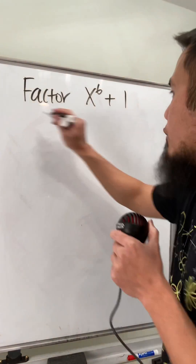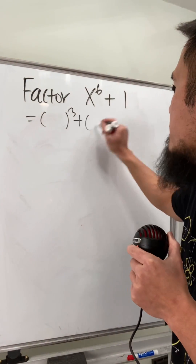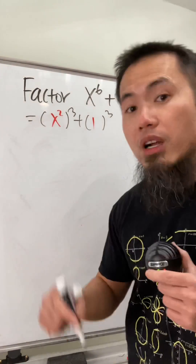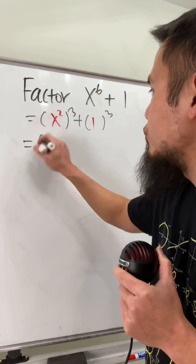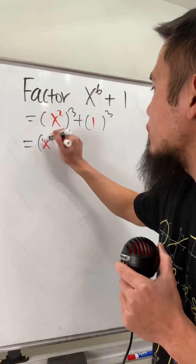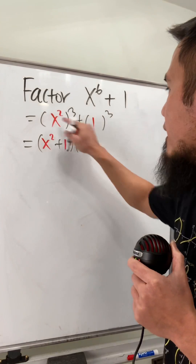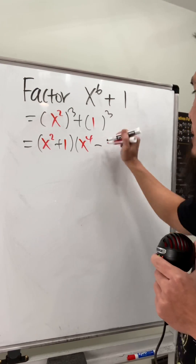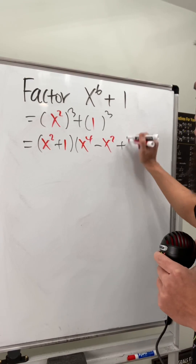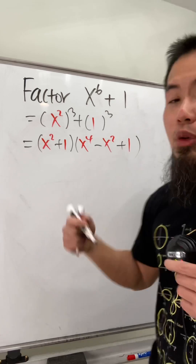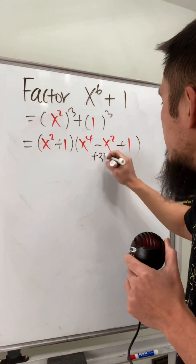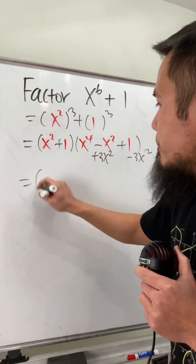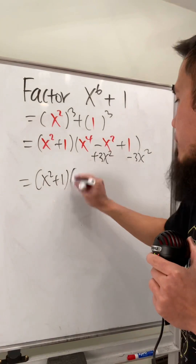To factor this out, first we want to look at this as a sum of two cubes, and then for the first parentheses enter x squared and put a 1 right here. Now we can use the formula from the previous videos, which will get x squared plus 1, and then don't forget this guy squared right here, so it's x to the fourth power. Minus this times I would use x squared, and then plus 1 squared which is plus 1 right here. You can actually keep going — all you have to do is just add 3x squared and then minus 3x squared.